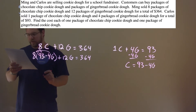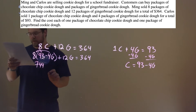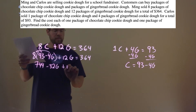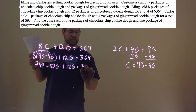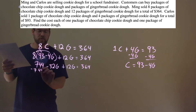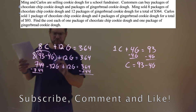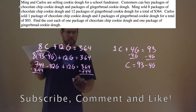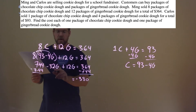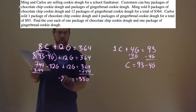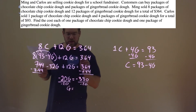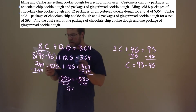Distribute the 8 to both parts. 8 times 93 is 744, and 8 times negative 4G is negative 32G. Then we have plus 12G equals 364. Let's bring our like terms together — subtract 744 from both sides. That cancels out, and I'm left with 364 minus 744, which is negative 380. Negative 32G plus 12G is negative 20G. Divide both sides by negative 20, and negative 380 divided by negative 20 is positive 19. So G equals 19.